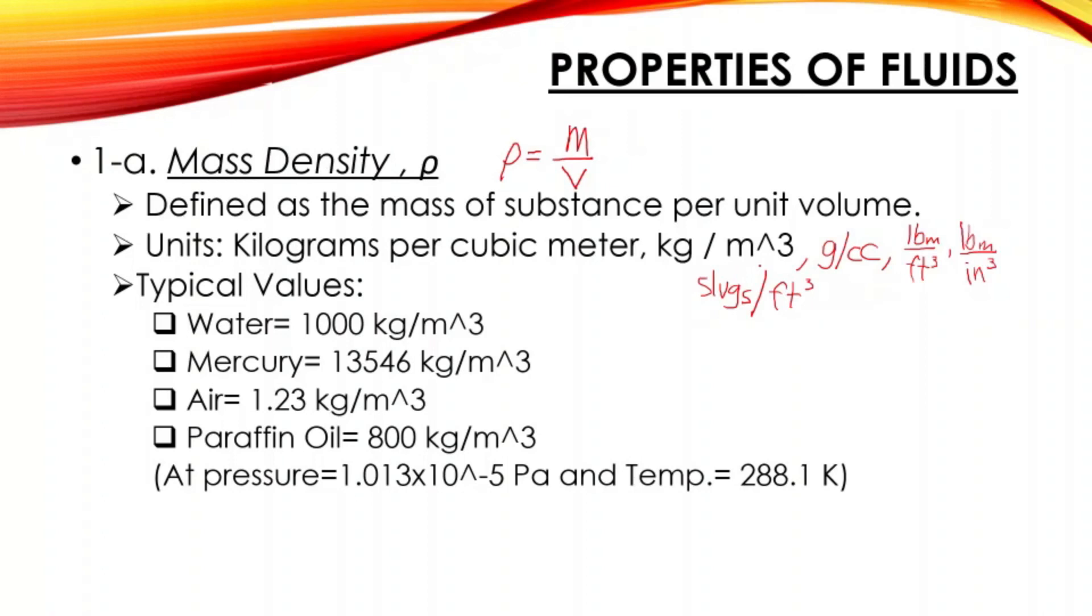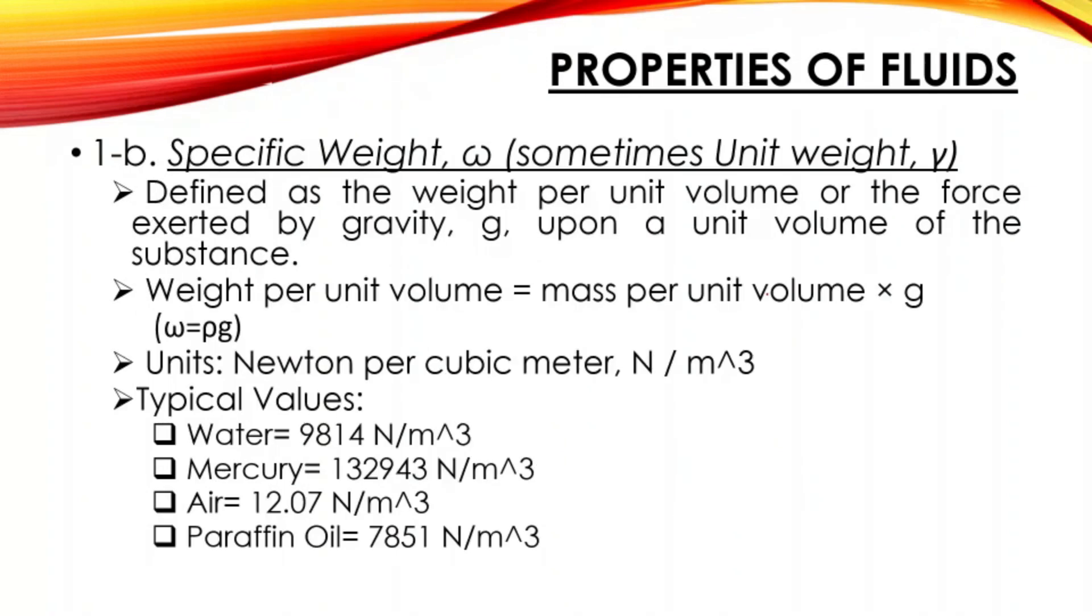Considering at pressure that is 1.013 times 10 raised to 5 pascals and temperature of 288.1 kelvin. For example, for water, normally if converted into gram per cc, that is one gram per cc. For slugs, that is 1.939 slugs per cubic foot. Those are the typical values.